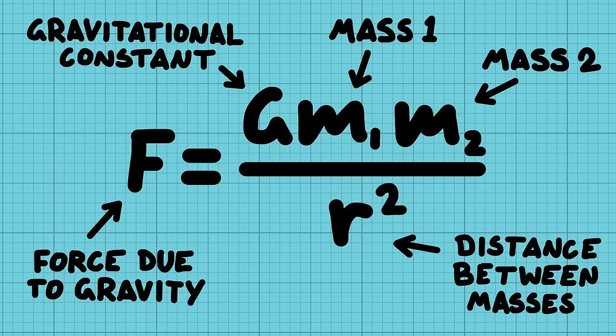Now you work out which letters are variables and which ones are constants. This formula has just got one constant, G, which is a tiny little number.